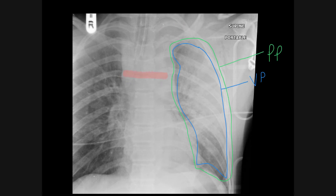As the mediastinum widens due to the injury, blood fills the mediastinal space and then it tracks superficial to the parietal pleura into the extra-pleural space — the so-called apical pleural cap.